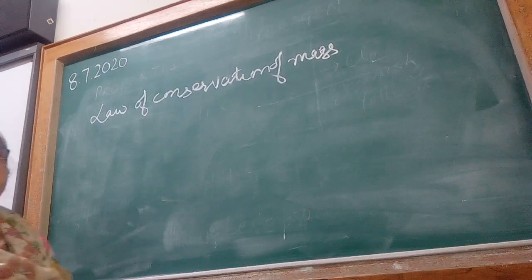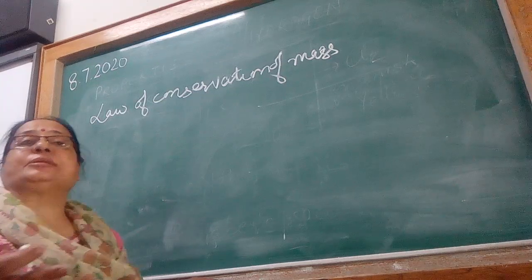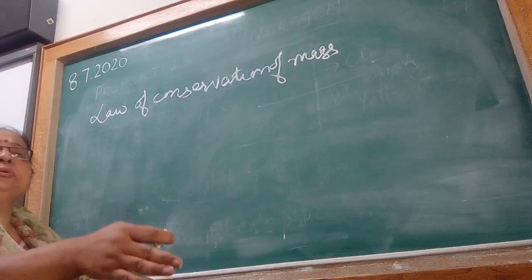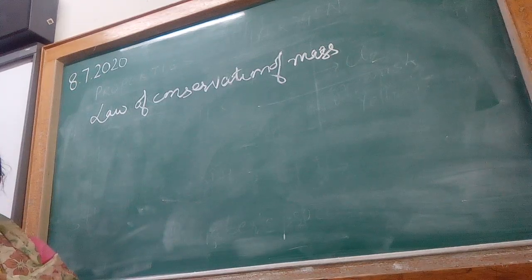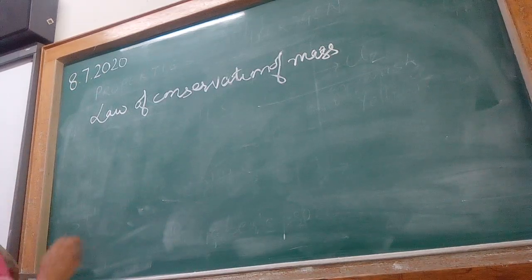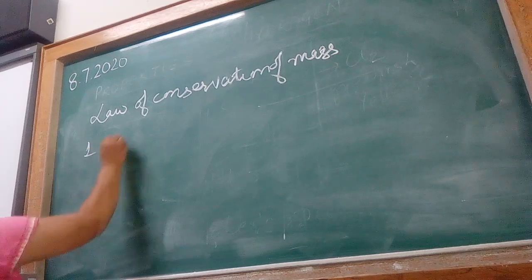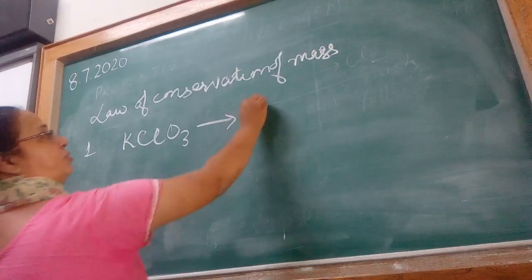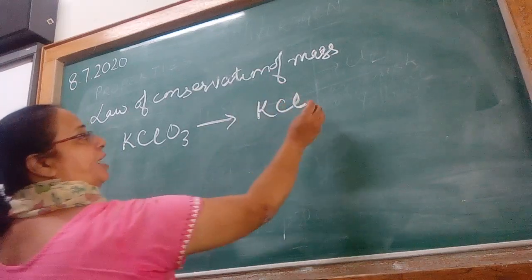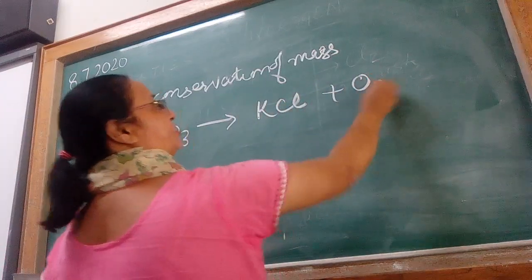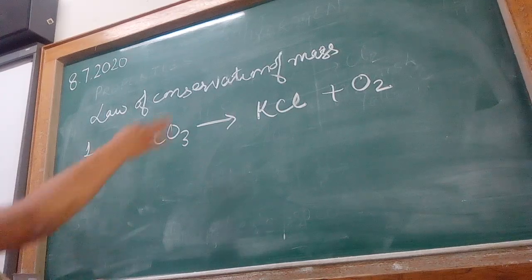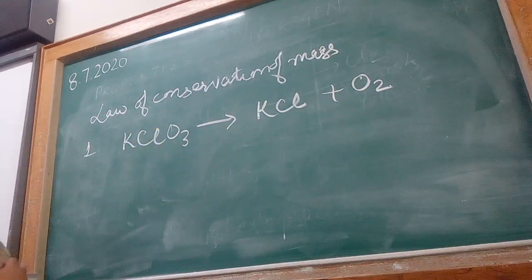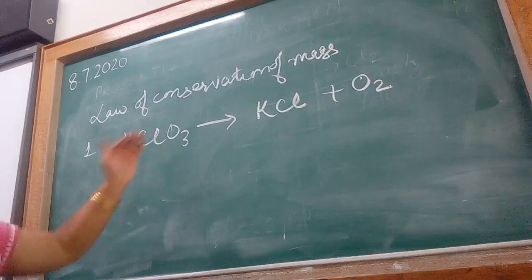Which element do we balance first? Whatever is clearly visible to you, you start with that element. For example, let's go to the first equation: potassium chlorate yields potassium chloride plus oxygen. Here, the clearly visible imbalance is oxygen — one side has 2 and the other side has 3.